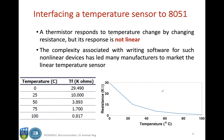Let us see how to interface a temperature sensor to the 8051. Usually a temperature sensor is implemented using a thermistor. A thermistor responds to temperature change by changing its resistance, but this response is not linear. If you have 0 degrees, the output is high, and at 25 degrees the output goes down sharply — a non-linear behavior. To calibrate this change of temperature with voltage, you need to calibrate these non-linear resistance values, which is complex.